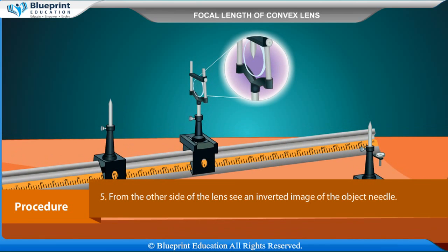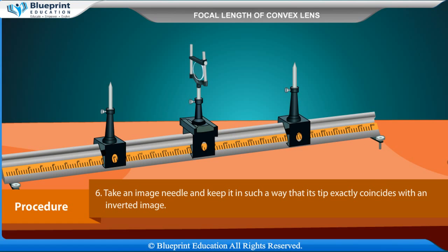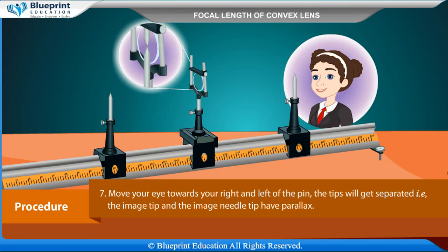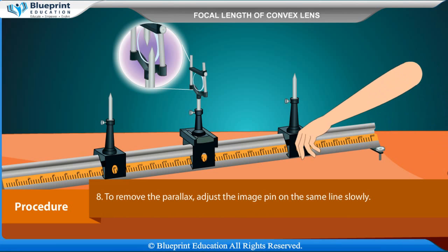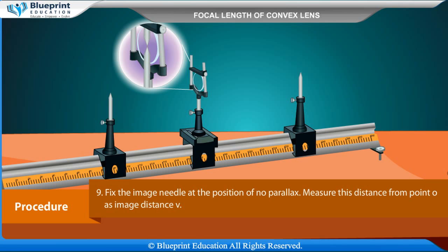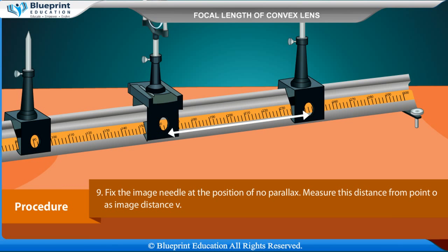Adjust the height of the object needle so its tip lies on the horizontal line through the pole of the lens. From the other side of the lens, observe an inverted image of the object needle. Take an image needle and position it so its tip exactly coincides with the inverted image. Move your eye to the right and left — the tips will get separated, meaning the image tip and image needle tip have parallax. To remove the parallax, adjust the image needle slowly until there is no parallax. Measure this distance from point O as image distance V.